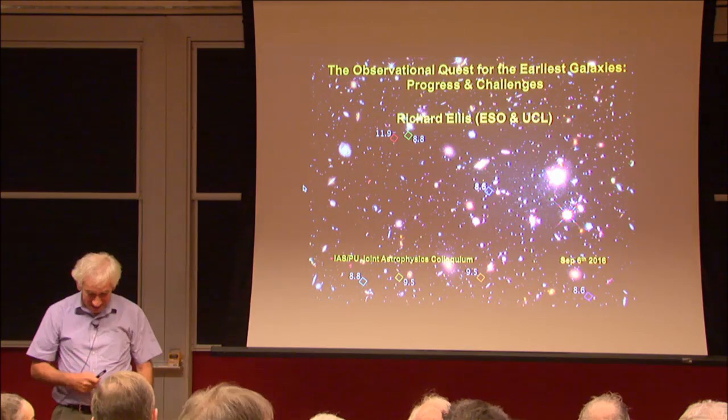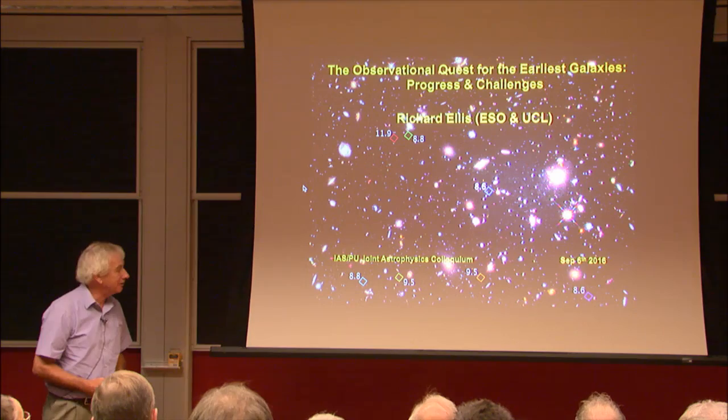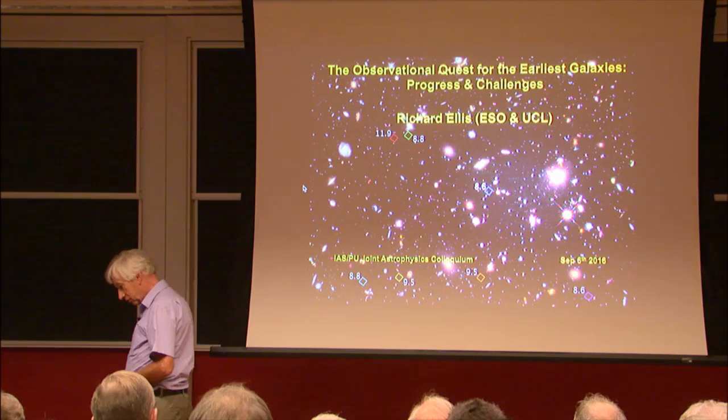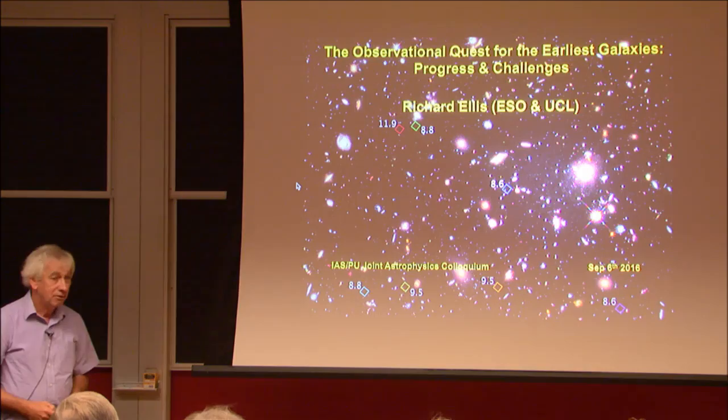This is the deepest image we currently have, taken with the Hubble Space Telescope. It's the ultra-deep field, a few years old now. It's a very small area of sky, a few minutes across, and the objects that you see marked here are their photometric redshifts. These are objects beyond a redshift of eight or so, seen when the universe was only a few hundred million years old.